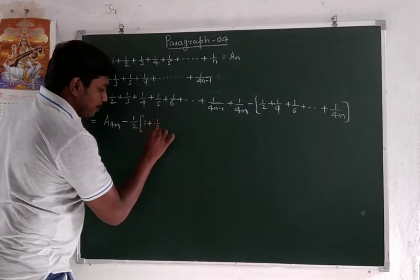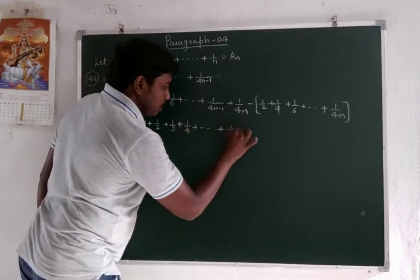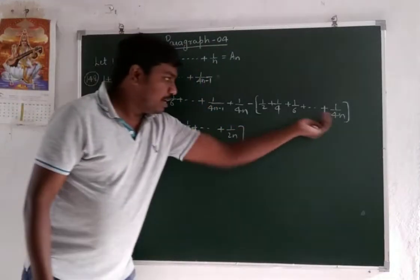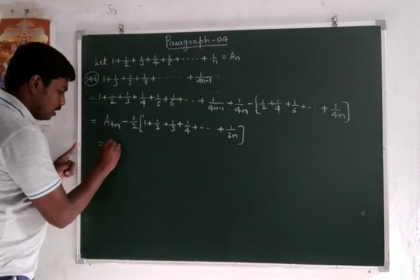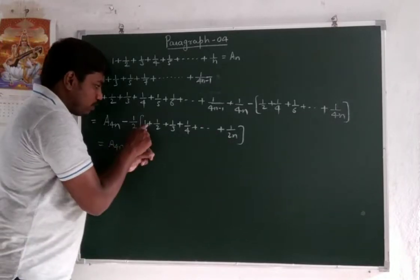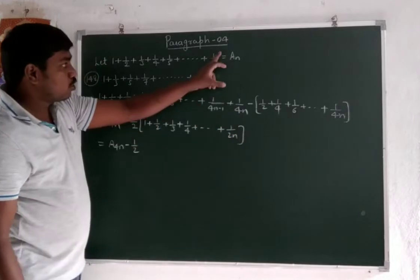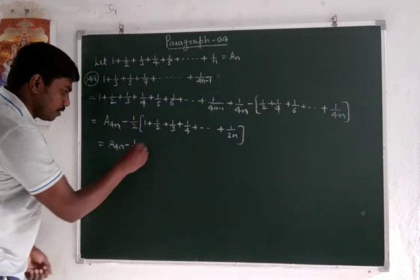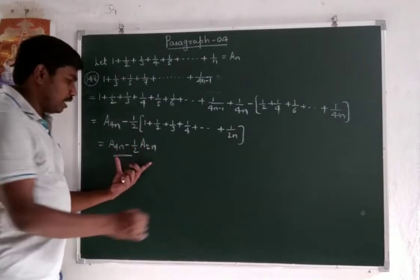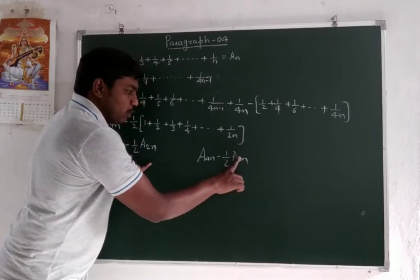Remaining terms are 1 plus 1 by 2 plus 1 by 3, last term is 1 over 2n. So a₄ₙ = a₂ₙ. Denominator is 2n. So a₄ₙ minus 1 by 2 into... this is a₄ₙ: 1 plus 1 by 2 plus 1 by 3 plus 1 by 4 plus 1 by 5 plus 1 by 6, up to 1 over 2n. That is a₂ₙ.